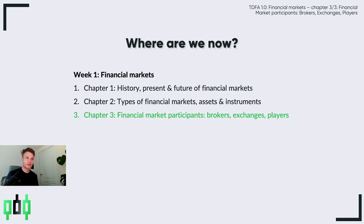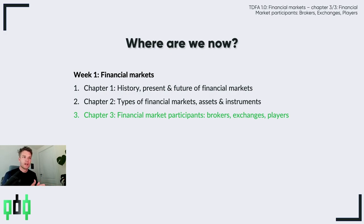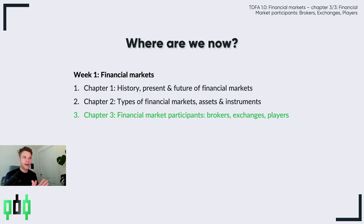With blockchain, you have a wallet address where you can hold your own assets. In the case of Bitcoin, you have a Bitcoin wallet—not held by a bank or brokerage, but your own wallet. If you want to sell, you send your Bitcoin to an exchange and sell it directly there, exchanging it for dollars, euros, or another coin. Then you can take your money back out of the exchange and hold it yourself.